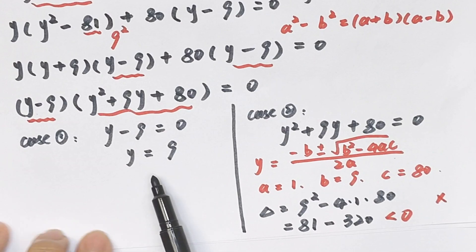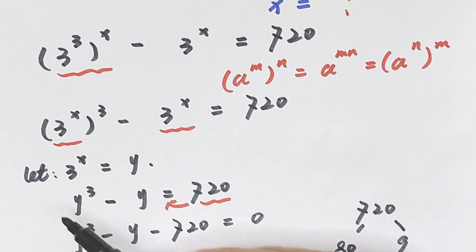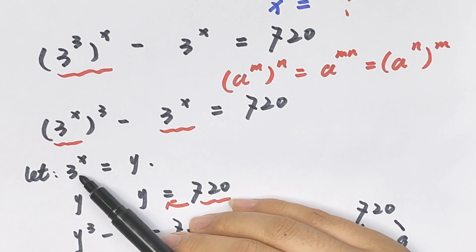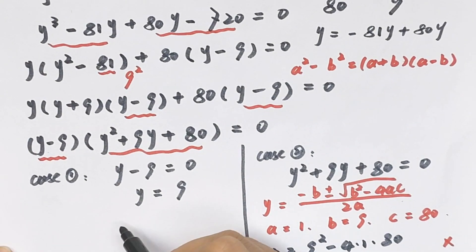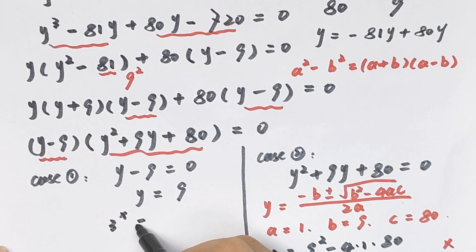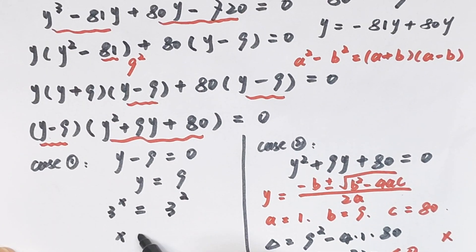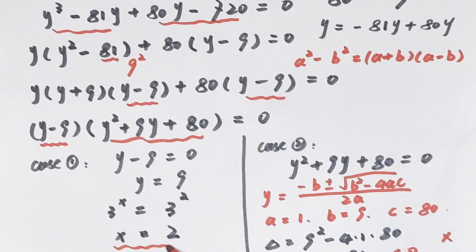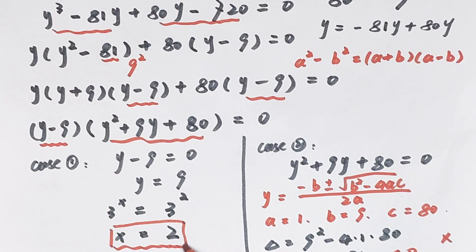This discriminant is less than 0, so we discard Case 2 and use y equals 9. Since we let 3 to the power of x equal y, and y equals 9, it means 3 to the power of x equals 9. And 9 equals 3 squared, so x equals 2. This is the final answer. Thank you for watching, and see you in the next video. Bye.